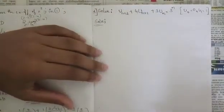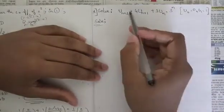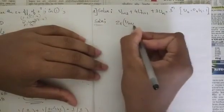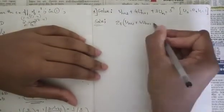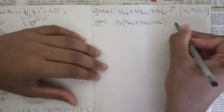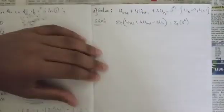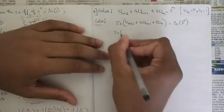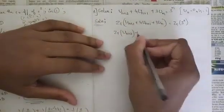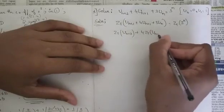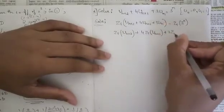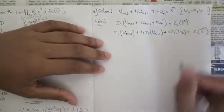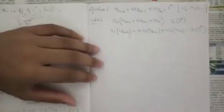Following the procedure, the first step is to take the Z-transform on both sides. So: Z-transform of [u(n+2) + u(n+1) + 3·u(n)] equals Z-transform of 3ⁿ. Applying the linearity property, we split it as: Z{u(n+2)} + 4·Z{u(n+1)} + 3·Z{u(n)} = Z{3ⁿ}.